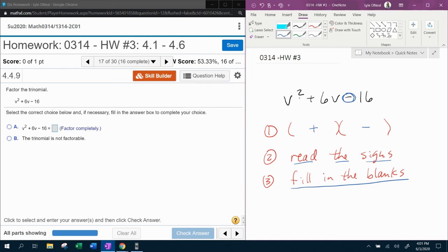So what does it take to make V squared? Well, it takes V times V to make V squared. And then for the other two blanks, I need numbers that multiply to make 16, that subtract and make 6. So we're going to come over here to the side and make a search for those numbers.